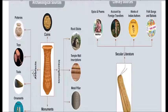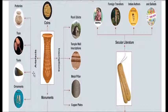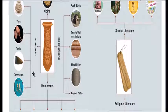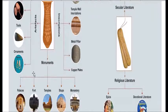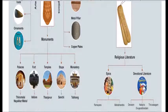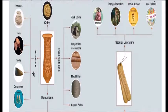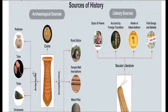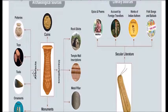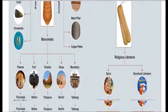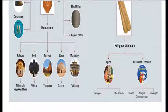Archaeological sources include artifacts, monuments, inscriptions, and coins. Artifacts may be potteries, toys, tools, etc. Inscriptions may be on rock, temple walls, metals, or copper plates. Monuments could be palaces, forts, temples, and monasteries. Literary sources could be of two types: secular literature and religious literature. Secular literature includes epics, poems, accounts by foreign travelers, works of Indian authors, folk songs, and ballets.